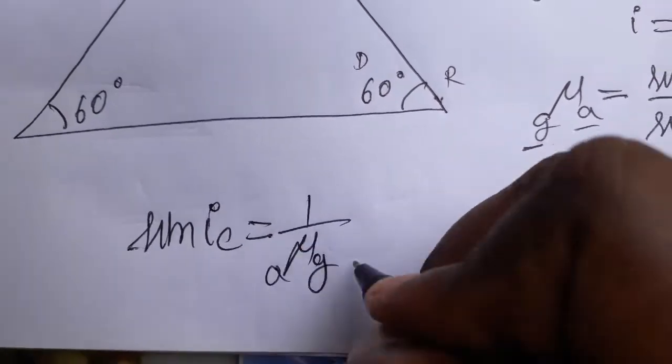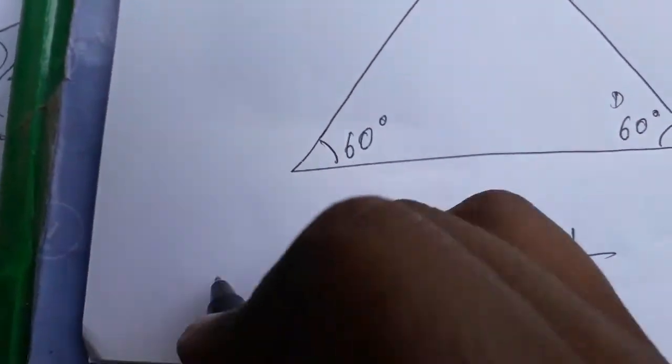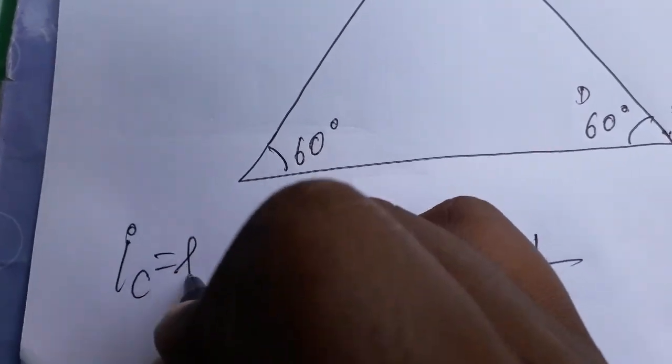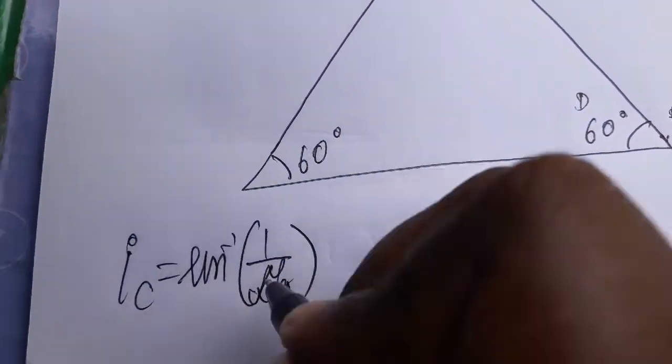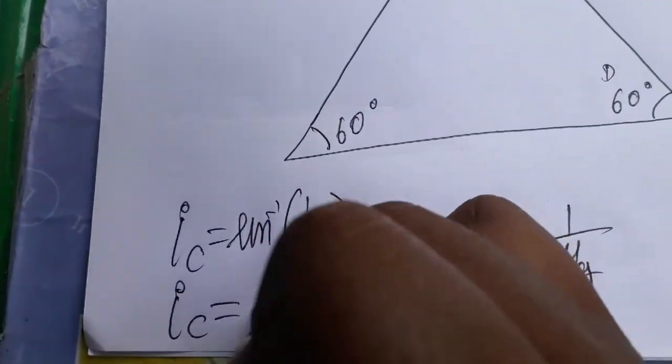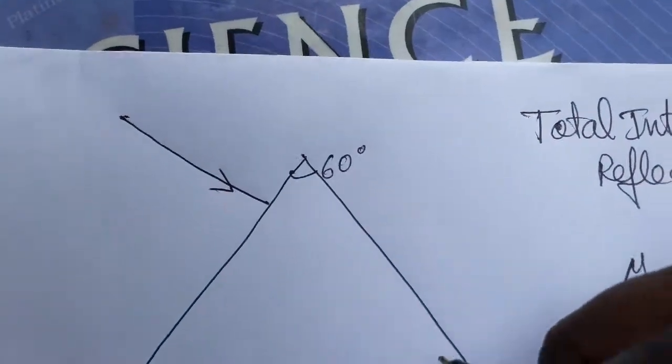For all glass prisms it is 1.5 mostly. So sin IC equals sin inverse of 1 divided by μ of A to G. That we are going to get as critical angle is 42 degrees. In case you get 42 degrees as critical angle, now we have to apply here.